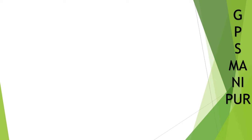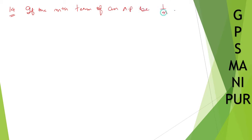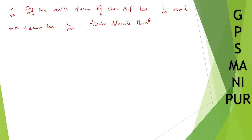We are doing question number 14. The question says: if the mth term of an AP be 1/n, and the nth term be 1/m, then show that the mnth term is 1.